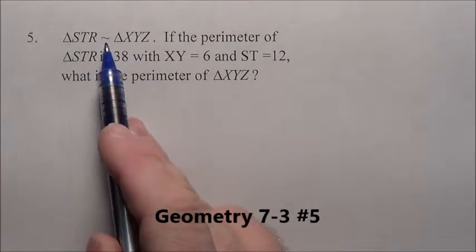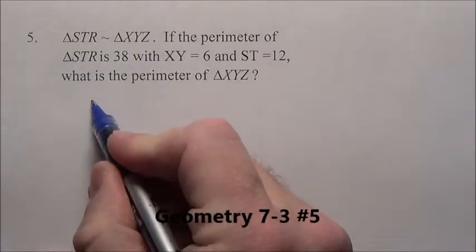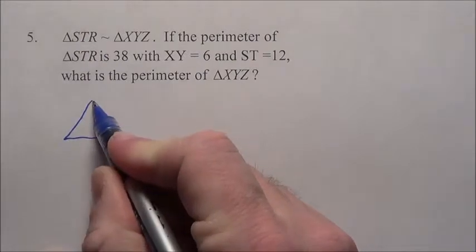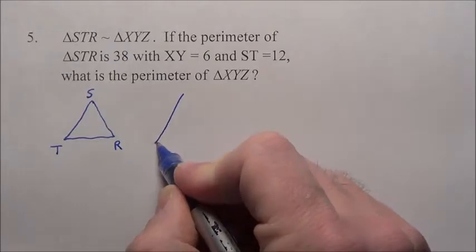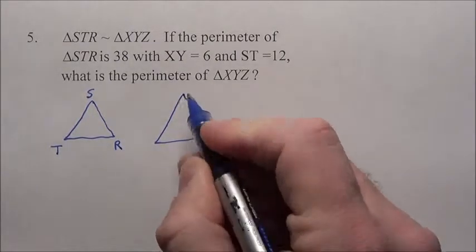Problem 5, it says triangle STR is similar to XYZ, so I'm going to draw that out first. I'm going to say, okay, I've got this STR, and it's similar to this guy, who's maybe bigger, maybe smaller, I don't know.